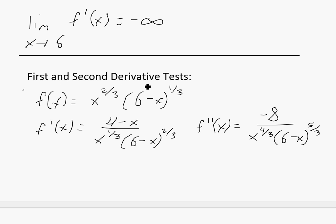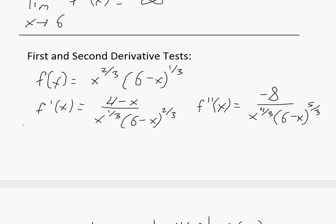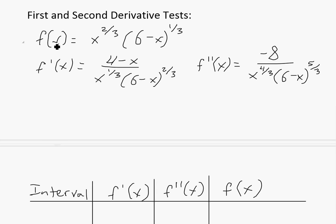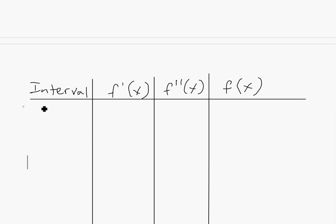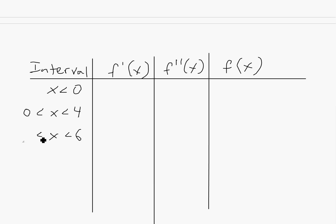Now we apply the first and second derivative tests. I'll write down the derivatives for reference. We examine the sign of f' and f'' over each interval defined by our critical numbers: x < 0, 0 < x < 4, 4 < x < 6, and x > 6.